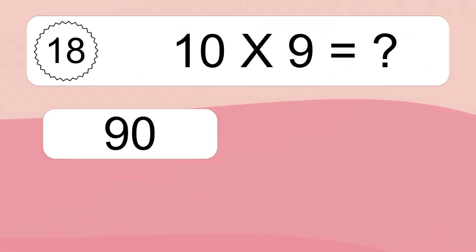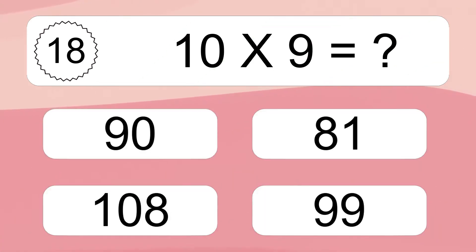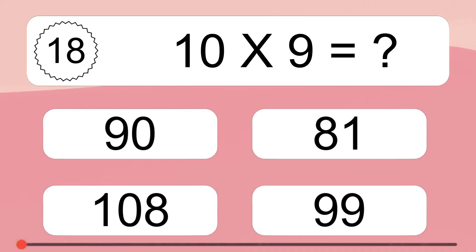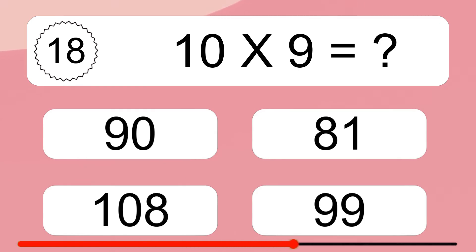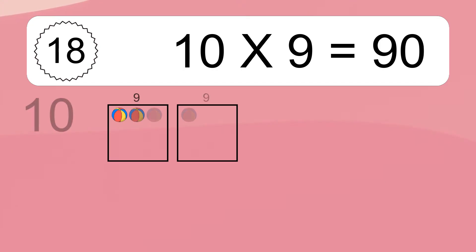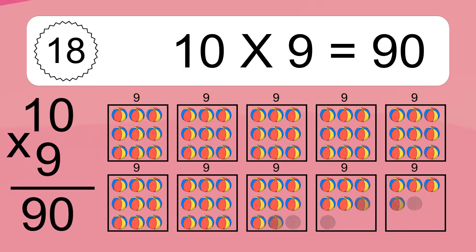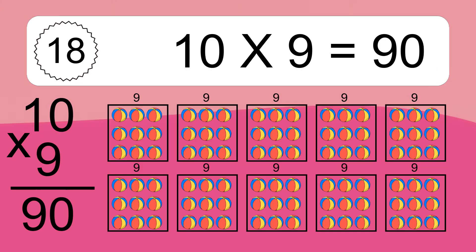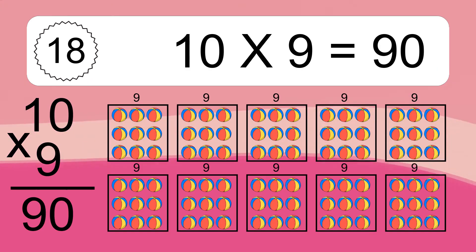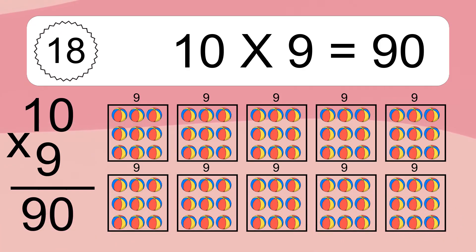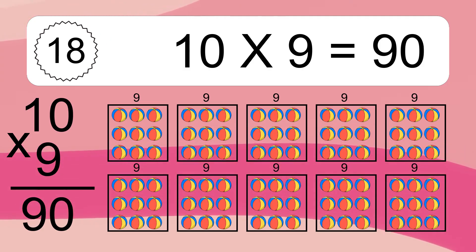Ten times nine equals what? Ten times nine equals 90. We have ten boxes and each box has nine colorful balls inside. If you count all the balls in all the boxes together, you will have ten times nine balls. This equals 90 balls.